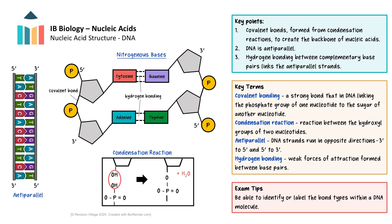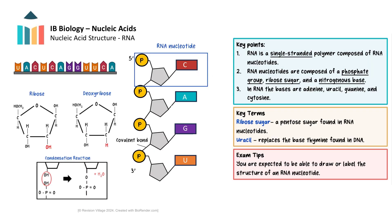Now let's look at RNA structure. RNA is a single-stranded polymer made up of RNA nucleotide subunits. Each RNA nucleotide is composed of a nitrogenous base, a ribose 5-carbon sugar, and a phosphate group. Note that the ribose sugar found in RNA nucleotides is different to the deoxyribose sugar found in DNA nucleotides. The difference lies in carbon 2: in ribose, there is a hydroxyl group, whereas in deoxyribose, the second carbon lacks the hydroxyl group and is bonded to hydrogen rather than oxygen and hydrogen. You can remember this because deoxy means without oxygen. Be sure that you can draw the structure of an RNA nucleotide, using a circle for the phosphate group, a pentagon for the sugar, and a rectangle for the nitrogenous base.